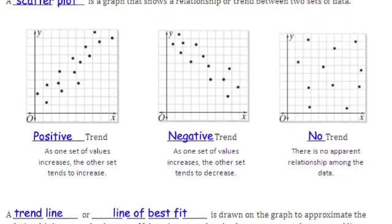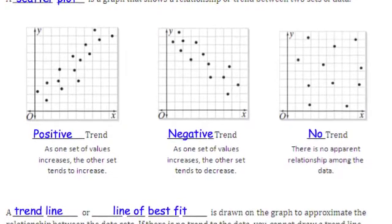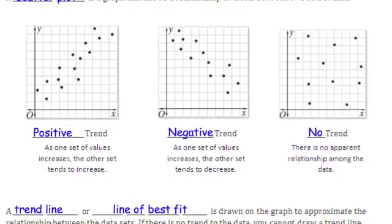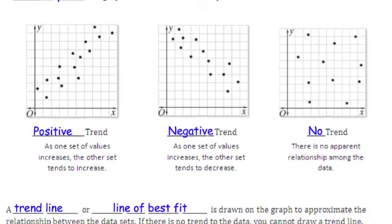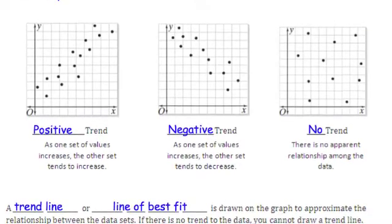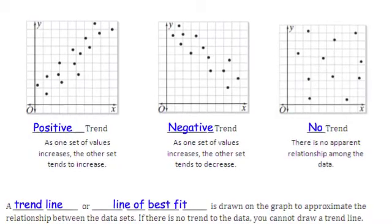The second graph shows a negative trend, where one set of values increases, the other set tends to decrease. The last graph shows no trend, where there is no apparent relationship among the data.